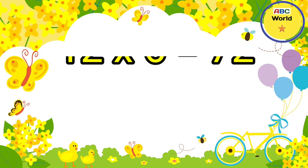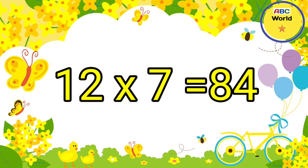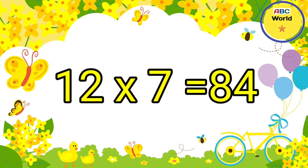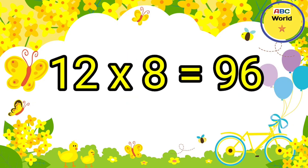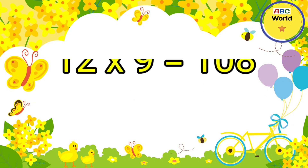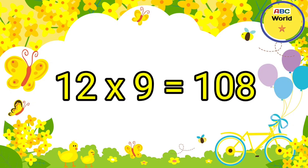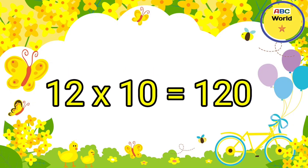12 sixes are 72. 12 sevens are 84. 12 eights are 96. 12 nines are 108. 12 tens are 120.